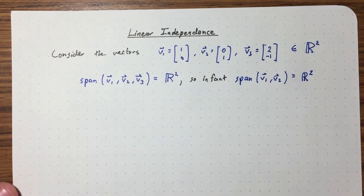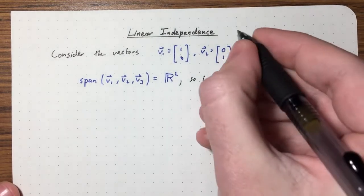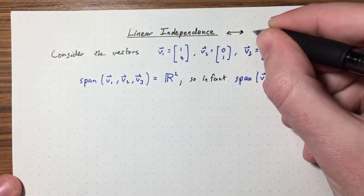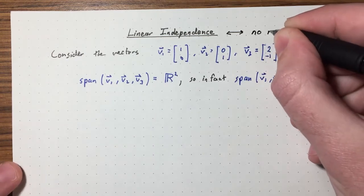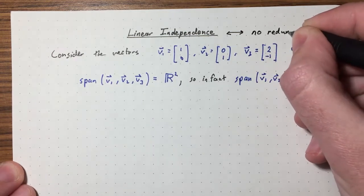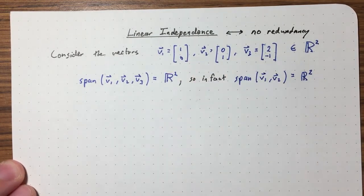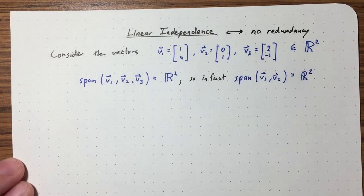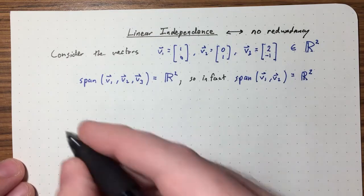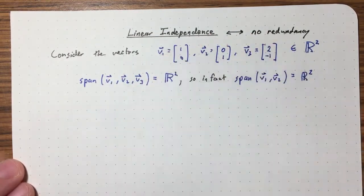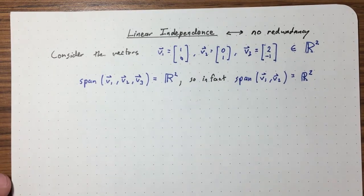In some sense, V3 didn't really add anything new to what we already had, in terms of linear combinations. There's some redundancy here. And that's sort of what linear independence is measuring — linear independence is essentially saying you have no redundancy.